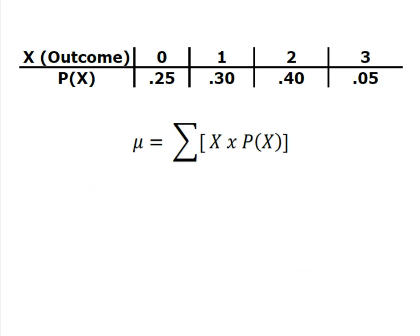So we're going to take her outcomes which is her number of bones and we're going to multiply them by the probability of the outcome. So 25% chance she finds none. There is a 30% chance she finds one. There's a 40% chance that she finds two. And there's only a 5% chance that she finds three.